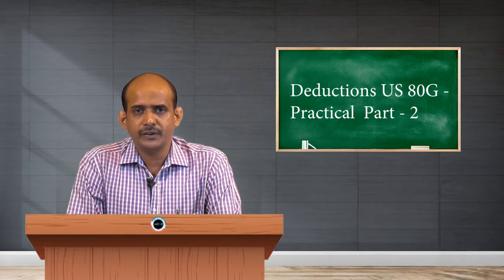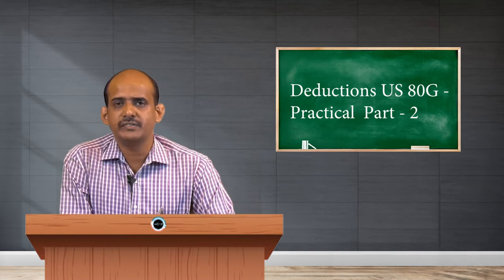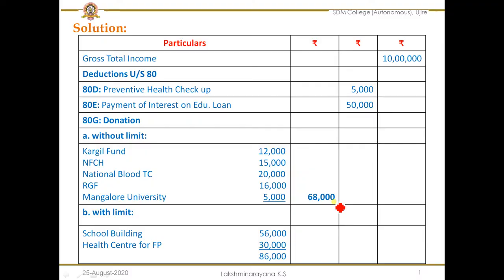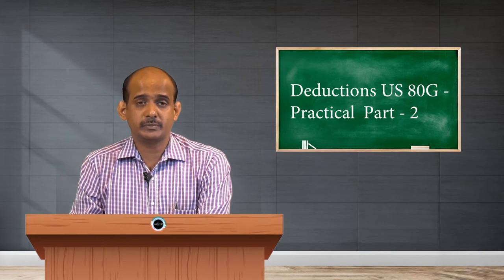Question number 3 has already been analyzed. So in this video, I will explain the calculation part of this question. First we have to take the gross total income. In the question, we are given a gross total income of rupees 10 lakh. We take that into consideration first, and from there we will calculate the net taxable income by claiming deductions under section 80G.